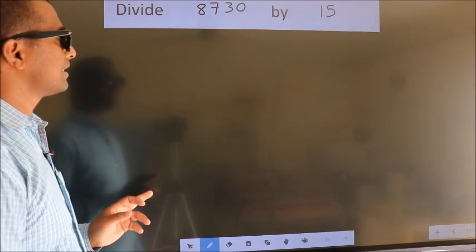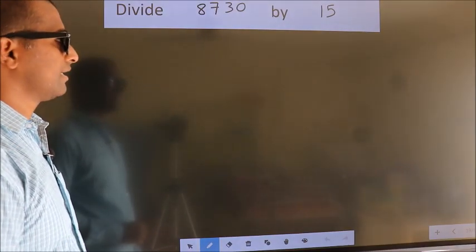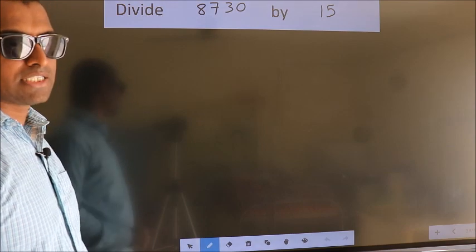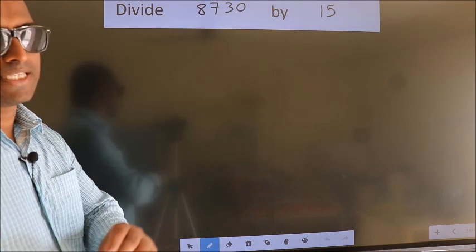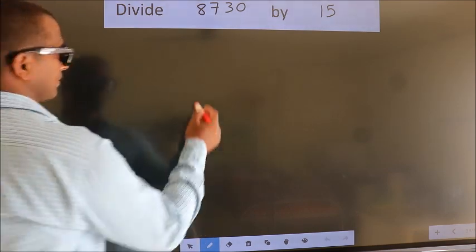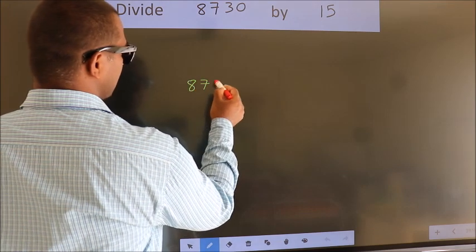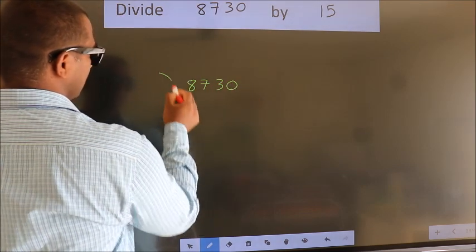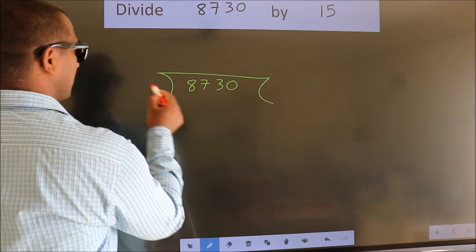Divide 8730 by 15. To do this division, we should frame it in this way. 8730 here, 15 here.